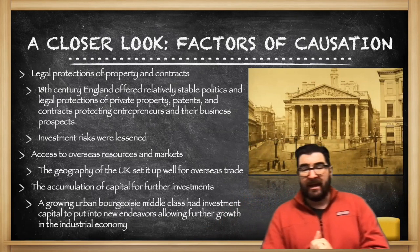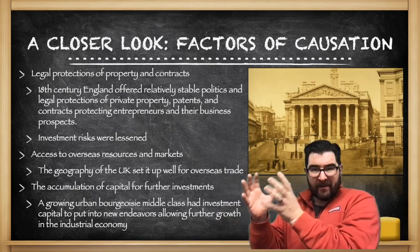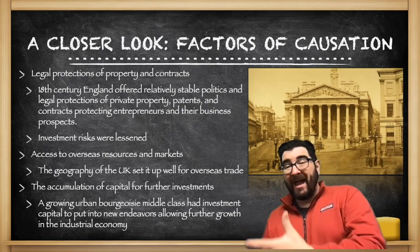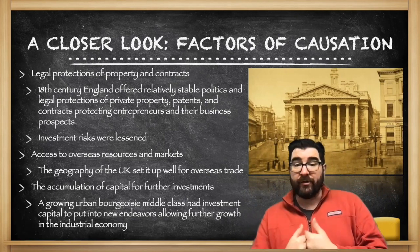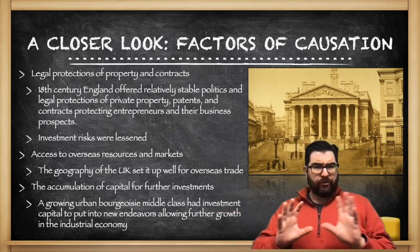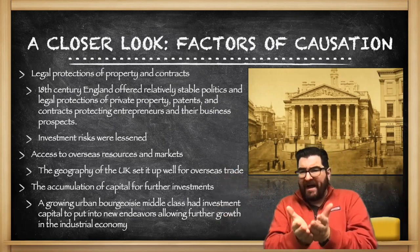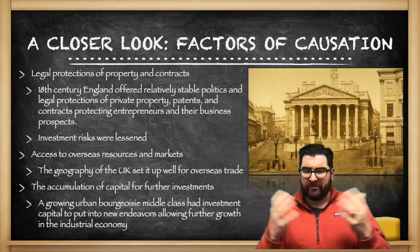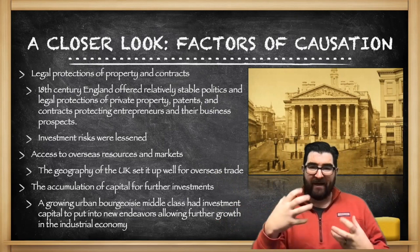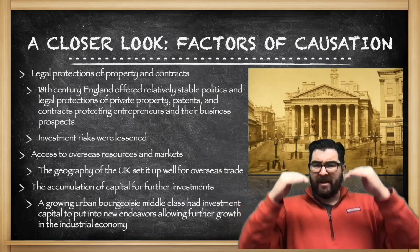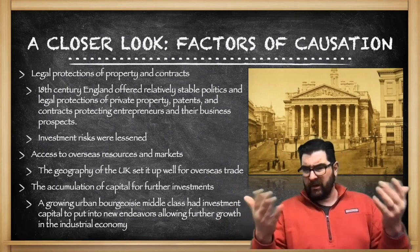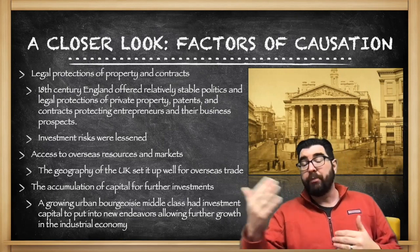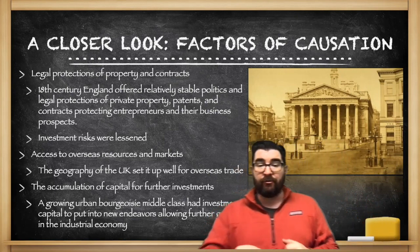There is also access in England to overseas resources and markets. The fact that England is an island in the North Atlantic is going to set them up well for overseas trade. England also has an accumulation of capital for further investments. Capital is anything that can be used to create wealth — but here we're talking about financial capital, like money. By the mid-1700s, England has had almost 200 years of joint stock companies that people could invest in and get a return on. This created a growing middle class — the bourgeoisie — with investment capital to put into new endeavors, allowing for additional growth in the industrial economy.